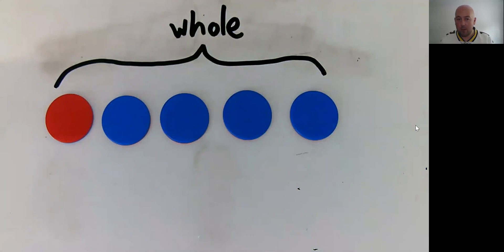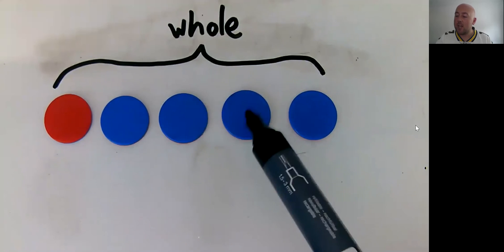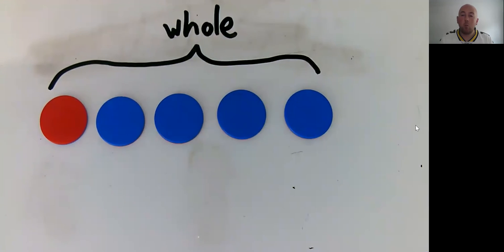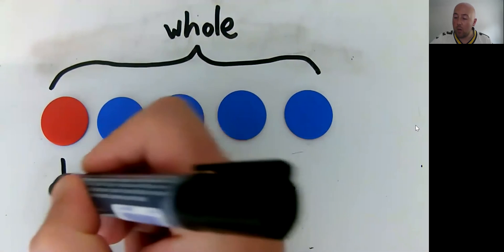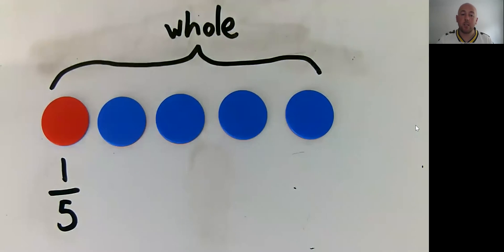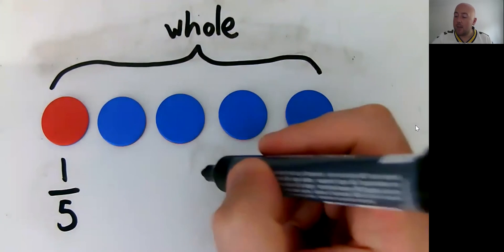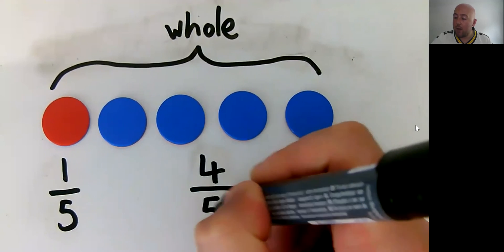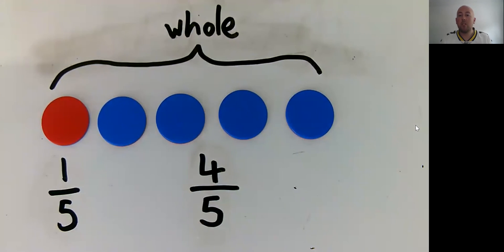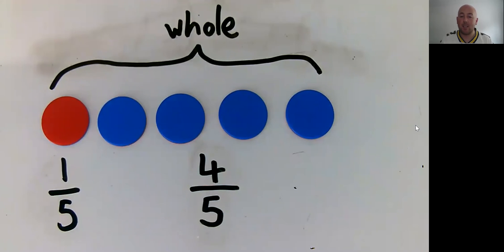Here you can see we've demarcated the whole. There are five parts representing that whole — one, two, three, four, five — and one of those five parts is red. So when we're talking to the pupils, we're talking about: one of those five parts is red, and that means four of the five parts is blue. Obviously you wouldn't necessarily encounter unit fractions and non-unit fractions in the same lesson, but the idea is that we're spending as little time as possible while exploring as much of the important facets as we can.